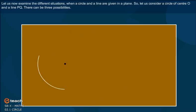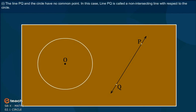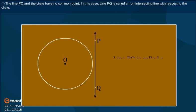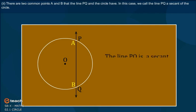Let us now examine the different situations when a circle and a line are given in a plane. Let us consider a circle with center O and a line PQ. There can be three possibilities. First, the line PQ and the circle have no common point — in this case, line PQ is called a non-intersecting line with respect to the circle. Second, there are two common points A and B that the line PQ and the circle have — in this case, we call the line PQ a secant of the circle.